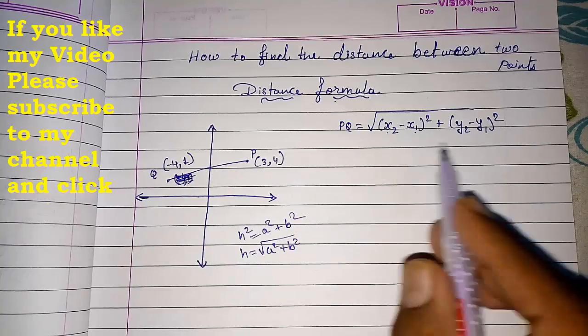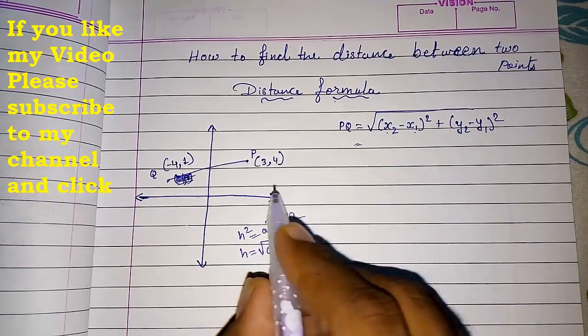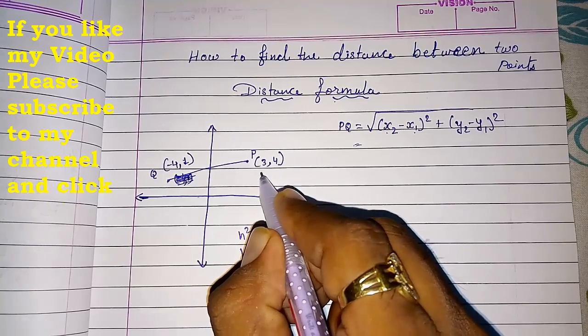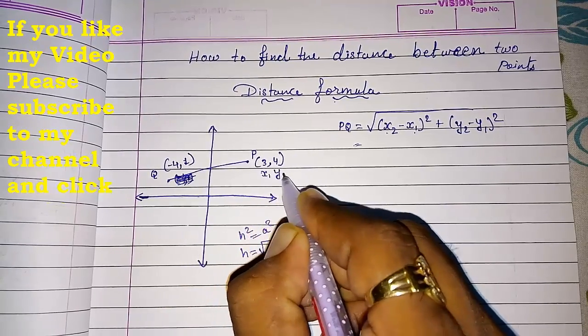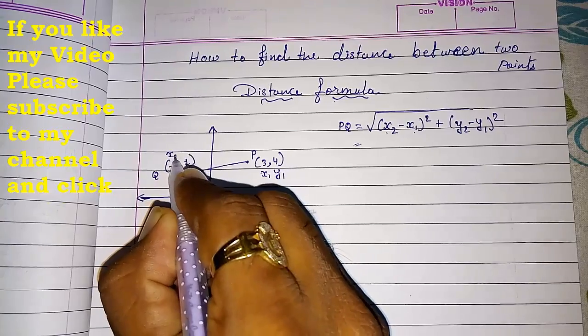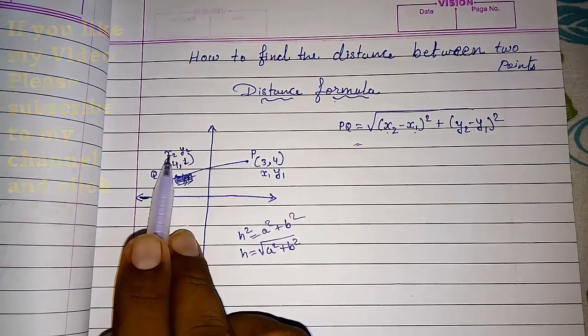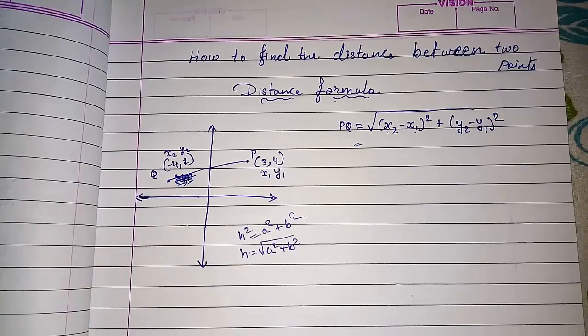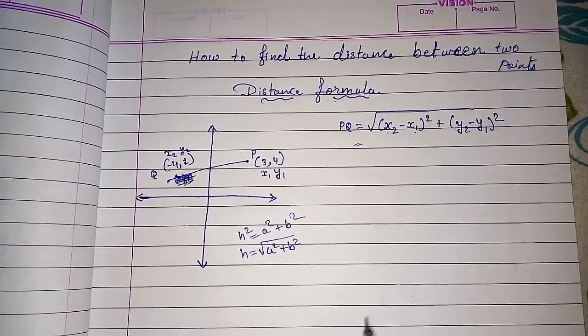Just going to tell you how we can solve this. Look here. Now the coordinates are given to these points. You can give X1 and Y1 to this coordinate and X2, Y2 to this coordinate. You can give X1, Y1 to this also and X2, Y2 to this also. Then also you will get the same answer. So don't worry about that.